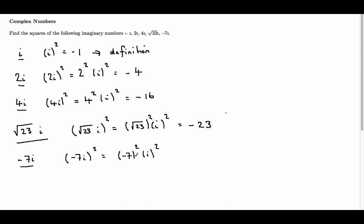Now, minus 7 squared is 49, and i squared is minus 1, so we get minus 49.